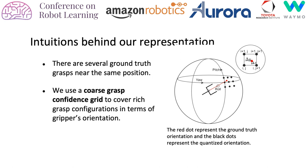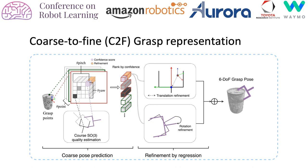The intuition behind our coarse-to-fine representation is that there are many viable grasps near the same position but with diverse orientations. We use a coarse grasp confidence grid to cover the orientation diversity. The C2F representation is shown in this figure.